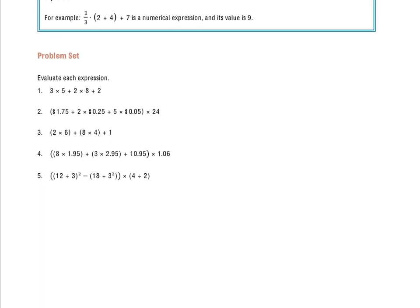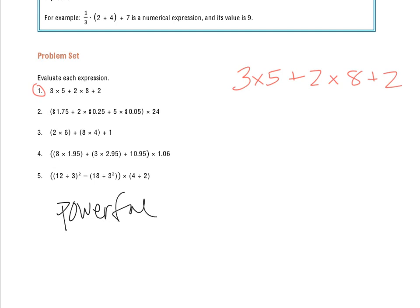I'm going to come down below and start right in with question 1. Based on the lesson, we know the first thing we're looking for is any grouping symbols — parentheses or brackets. I see that there are none in there, so I can go to my next step in the order of operations. We want to look for the most powerful operation, and the first one is the exponents.